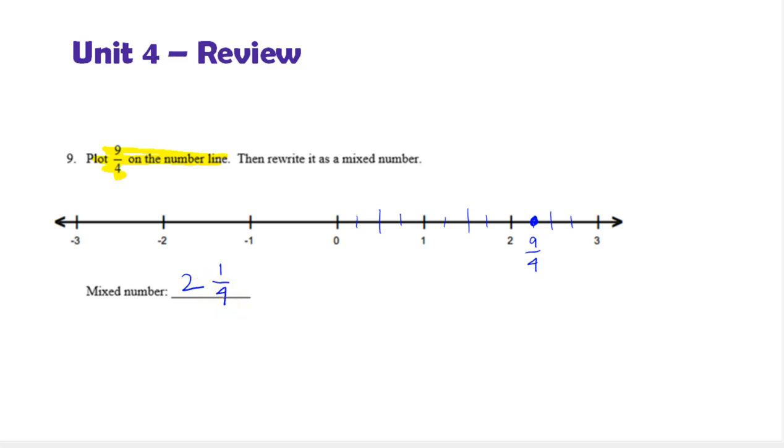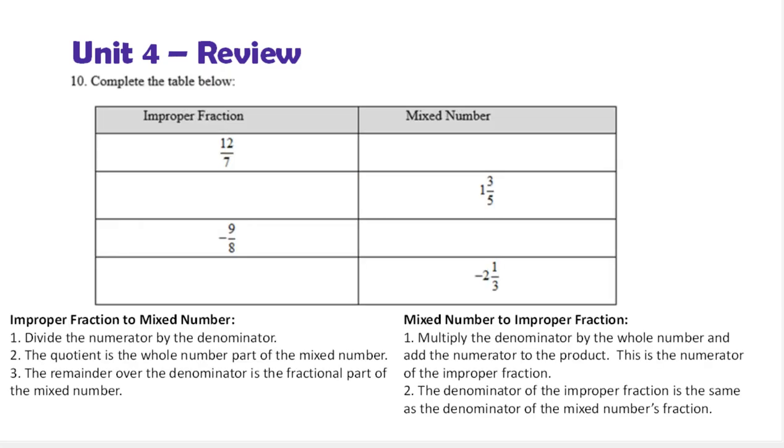Let's look at the next one. Here we're asked to complete the table below. We have improper fractions and mixed numbers, and we're given one or the other and need to rewrite it. Similar to what we did on the number line, but now we're going to do this by hand using the calculator. The processes are written in words down here, but we're just going to do these by hand and follow these processes.